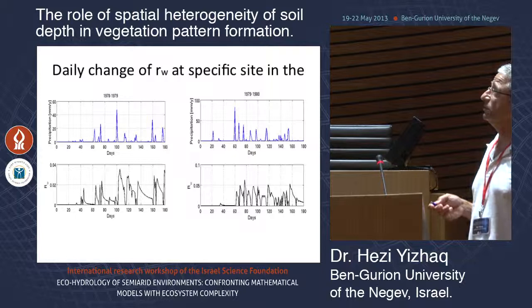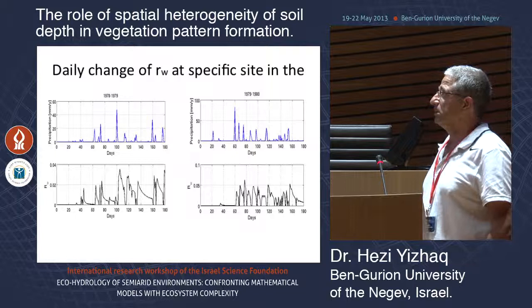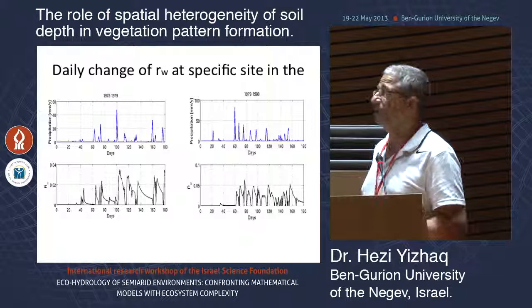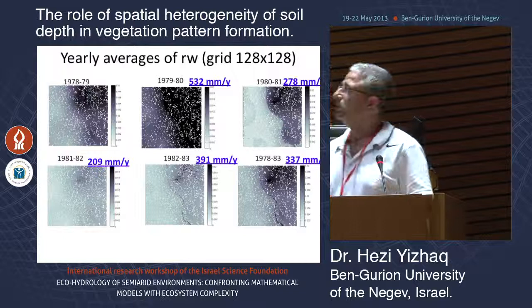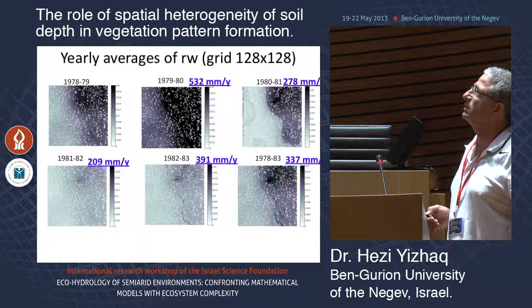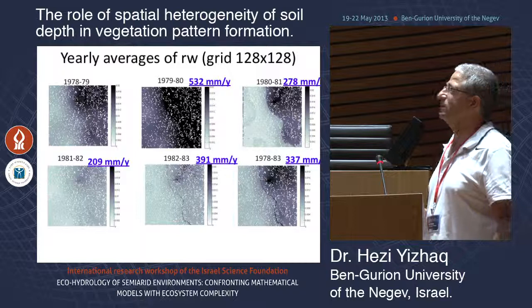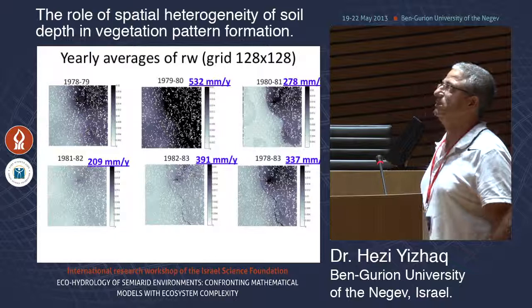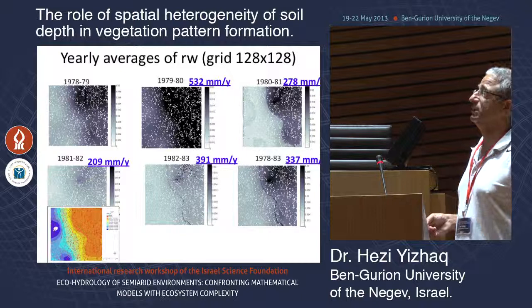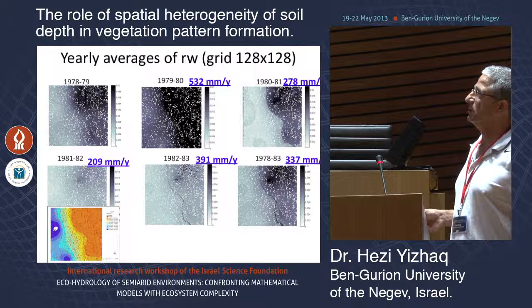This shows the daily change of Rw at a specific site in the plot for the year 1978–79. After a rainfall pulse, Rw shows a decay. On the day it rained, Rw is zero — that is by definition. The map of the average Rw in each year shows that in a rainy year we do not see the difference reflecting soil depth, whereas in a year with lower rainfall the Rw map correlates more with the soil depth map.